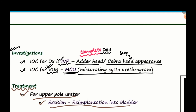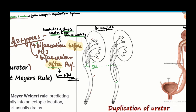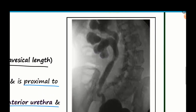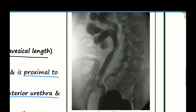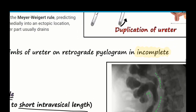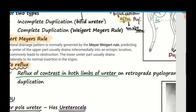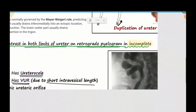For incomplete DOU, the key finding is yo-yo reflux. On RGP — retrograde pyelogram, in which dye is injected from distal to proximal — you see the renal pelvis with two heads that join to form a complete single ureter. Reflux of contrast in both limbs of the ureter on retrograde pyelogram in incomplete DOU is known as yo-yo reflux.